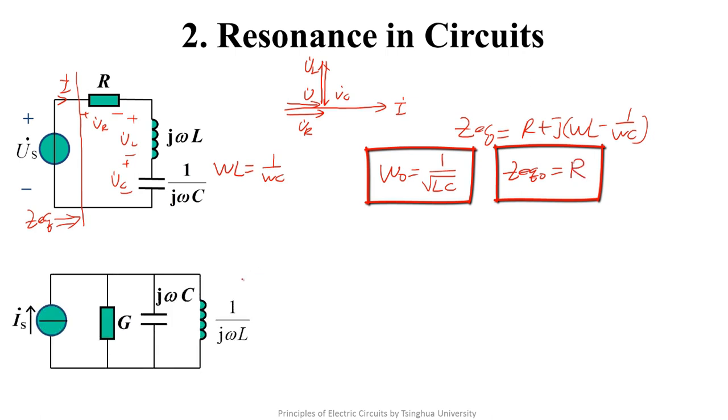For the parallel RLC circuit, we can also discuss it from the viewpoint of duality, so it's a current source here. We will draw its phasor graph and mark branch variables. We define the voltage as a reference phasor. The voltage and the current of conductance are in phase. I_C leads U by 90 degrees, and I_L lags U by 90 degrees.